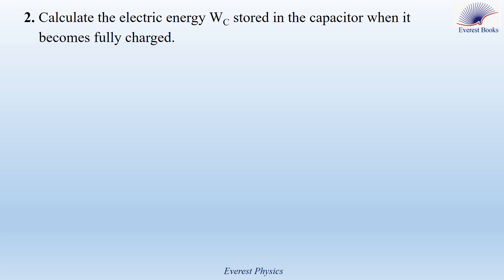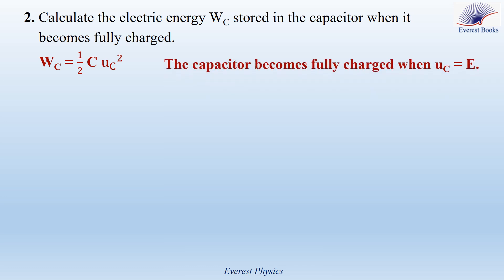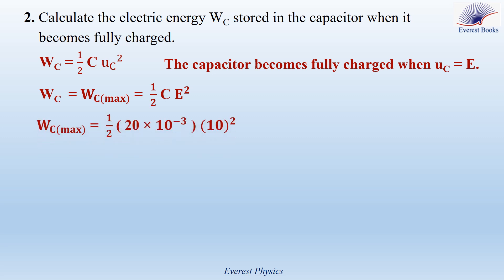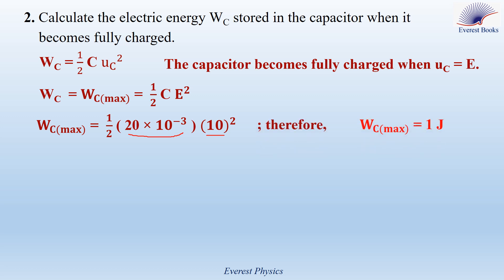Question 2: calculate the electric energy Wc stored in the capacitor when it becomes fully charged. The electric energy stored in the capacitor is given by Wc = ½·C·Uc². When the capacitor becomes fully charged, the voltage across its terminals equals E, so Wc = Wc_max = ½·C·E². Substituting the values: C = 20 millifarads = 20 × 10⁻³ farads and E = 10 volts. Therefore, the energy stored in the capacitor when fully charged is equal to 1 joule.